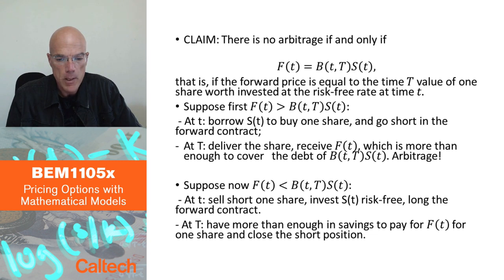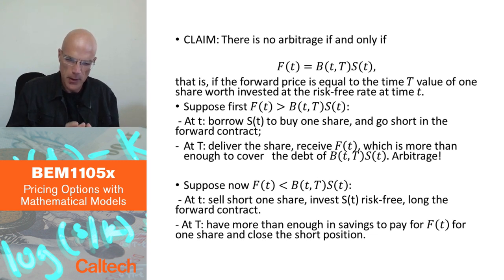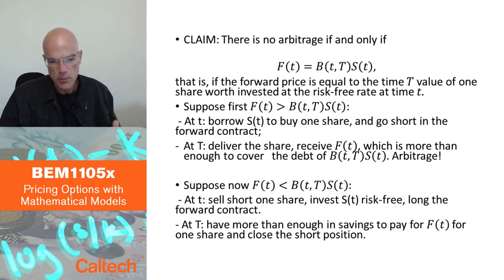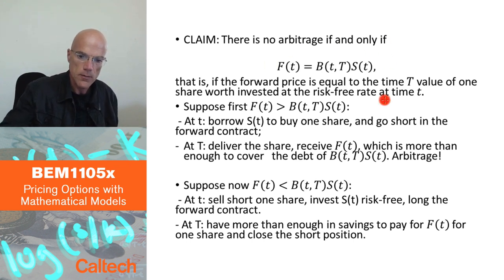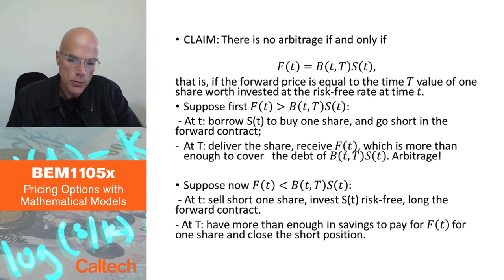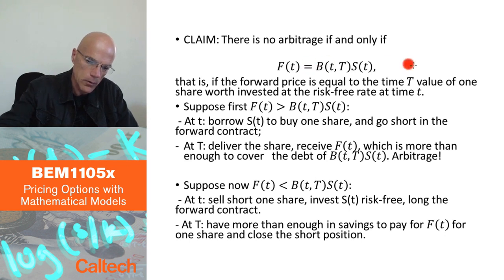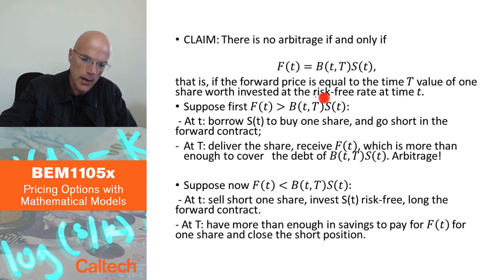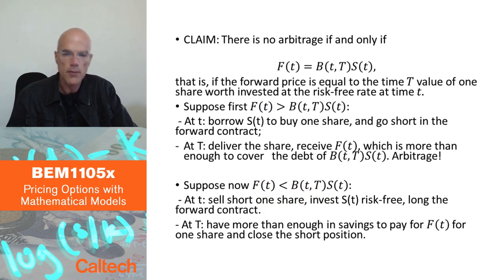We are going to have many similar proofs based on the same idea. Let's assume something like this is not true, find arbitrage, and therefore conclude it must be true — proof by contradiction. In this case, since we have an equality, I'll prove two things: first that F(t) cannot be strictly higher than B(t,T)·S(t), and then that it cannot be strictly lower. In either case, I'll find arbitrage and conclude it must be equal.